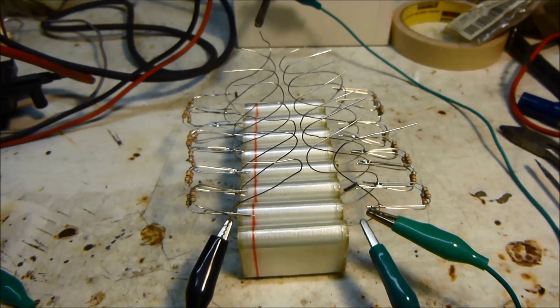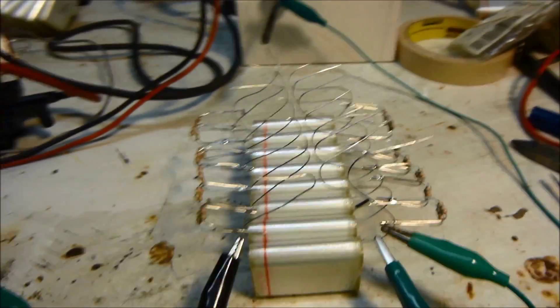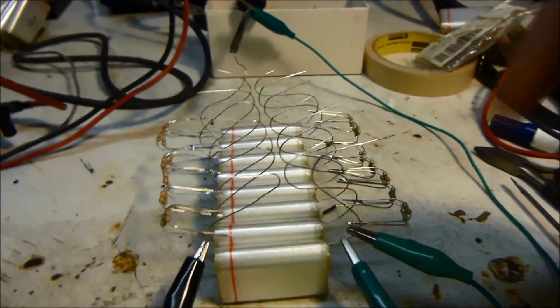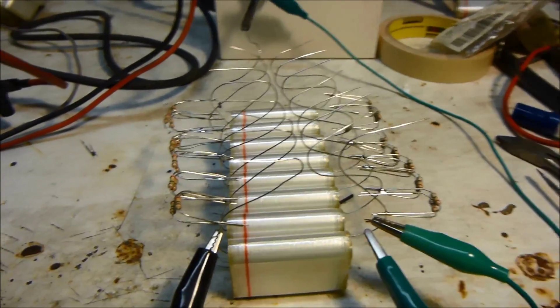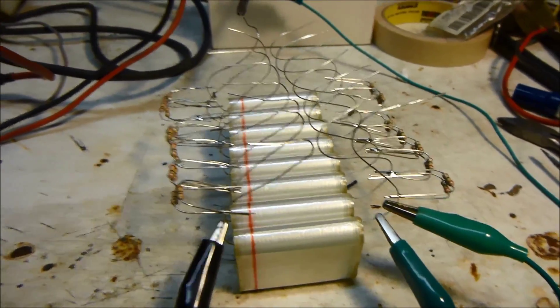Hello, this is MakerJ101 and here's something quick I just put together. This is called a Marx generator and it uses a bunch of capacitors and resistors and it's really relatively simple.